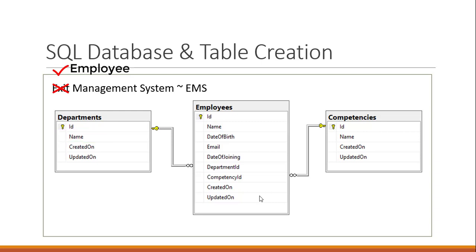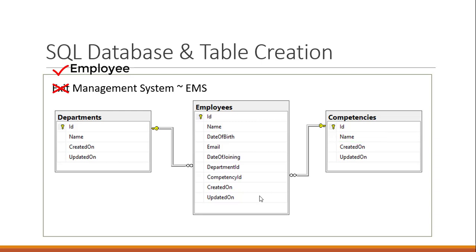It's the same for competencies as well. We have a competency ID column and it is the foreign key for the employees table. If you notice the connection, it eventually goes to the competency table's ID column, which is the primary key for that table. This way we will get to know the competency for the particular employee. Now that we know what needs to be done, let's get into action.